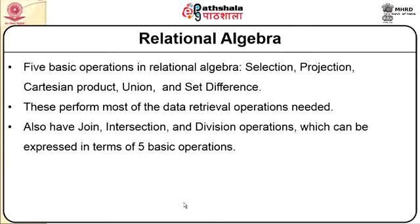There are basically five relational algebra operators: selection, projection, Cartesian product, union, and set difference. These five operators perform most of the data retrieval operations that are needed. We also have other operations like join, intersection, and division, which can be expressed over and above these five relational algebra operators.